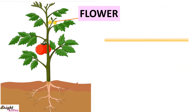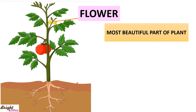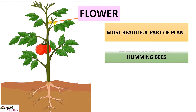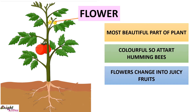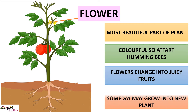Flowers are the most beautiful part of the plant. They are colorful, so they attract humming bees and birds. Flowers eventually change into juicy fruits. Flowers also produce seeds which someday may grow into a new plant.